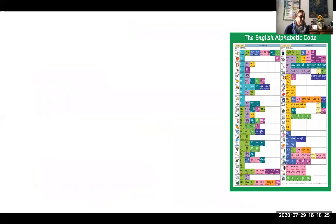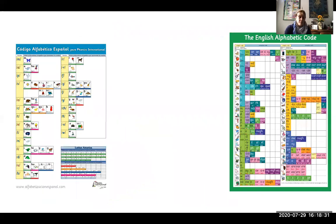Now, let's compare the English Alphabetic Code with a Spanish Alphabetic Code. Spanish, Italian, German, Finnish have an easy alphabetic code.